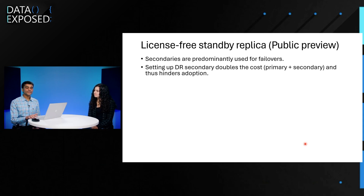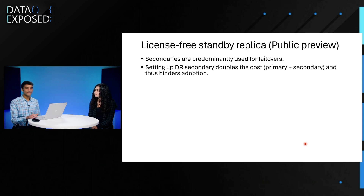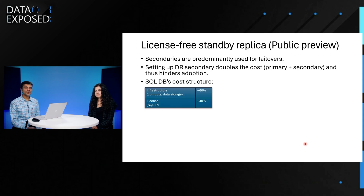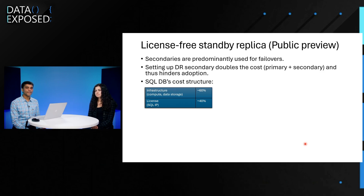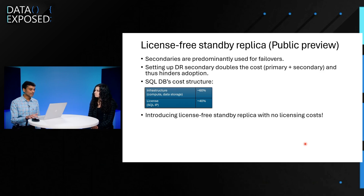Setting up DR — feedback that came directly from customers — doubles the cost, because you need to replicate deployments from primary and create a secondary equally sized to primary, which is the recommended way, and that hinders adoption. If you look at SQL DB's cost structure, infrastructure cost is about 60%, meaning compute, storage, and such. We also charge the SQL IP, which is the license line item, roughly about 40%. What we are introducing is a license-free standby replica, which does not have any license costs.